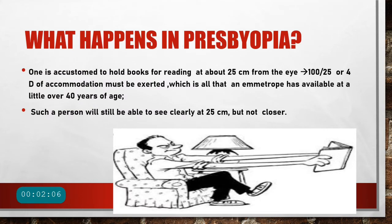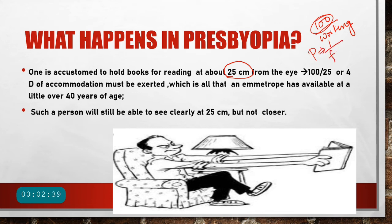What exactly happens in presbyopia? We are usually accustomed to holding books at a reading distance of about 25 centimeters. The diopters of accommodation needed to focus a book at 25 centimeters is given by the formula 100 divided by working distance in centimeters — since power equals 1 divided by focal length in meters. For 25 centimeters: 100 divided by 25 equals 4 diopters of accommodation, which must be exerted consistently to read at 25 centimeters.